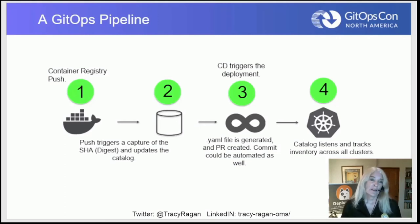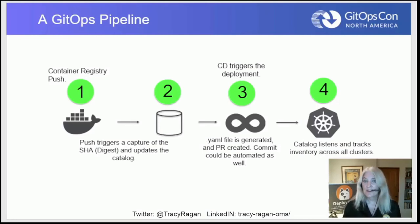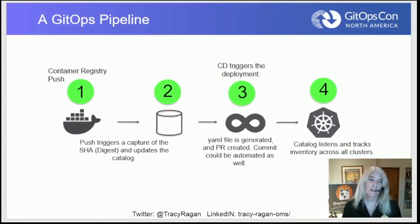Think about the pipeline as looking like this: you get a container registry push. As soon as a new container has been registered to a container registry, something gets triggered to update the catalog, and it pulls all that SHA information. The catalog then stores that data until a deployment is triggered. At that point, the YAML file is generated and a pull request is created. Once that commit is executed, it gets pushed out to the end targets. Automating these steps is what will be critical to achieve success in both microservices and a GitOps model.